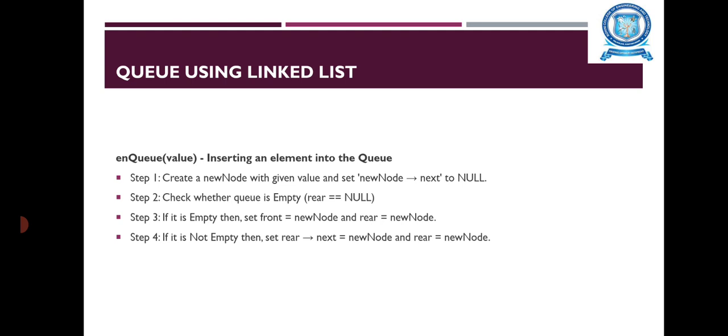Using the linked list, the enqueue method works as follows. The enqueue function is mainly used to insert an element into the queue. First, create a new node with the given value and set new_node->next to null. Check whether the queue is empty. If it is empty, then set front equal to new_node and rear equal to new_node. If it is not empty, then set rear->next equal to new_node and rear equal to new_node. This completes the enqueue operation.